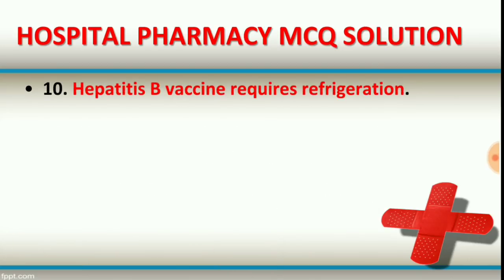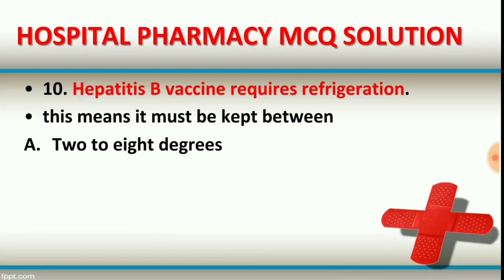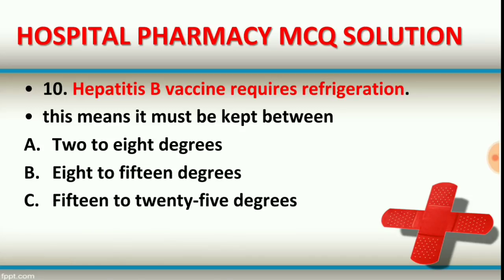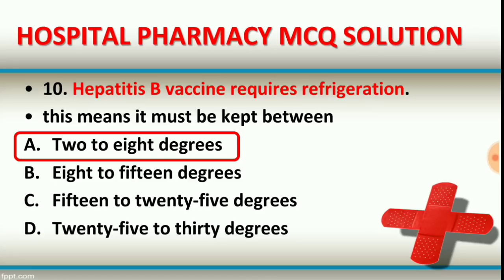Question number ten is about refrigeration storage temperature. Option A: 2 to 8 degrees Celsius. Option B: 8 to 15 degrees Celsius. Option C: 15 to 25 degrees Celsius. Option D: 25 to 30 degrees Celsius. The right answer is option A, 2 to 8 degrees Celsius. The refrigeration temperature is 2 to 8 degrees Celsius — hepatitis B vaccines require refrigeration and should be stored at 2 to 8 degrees Celsius in a refrigerator.